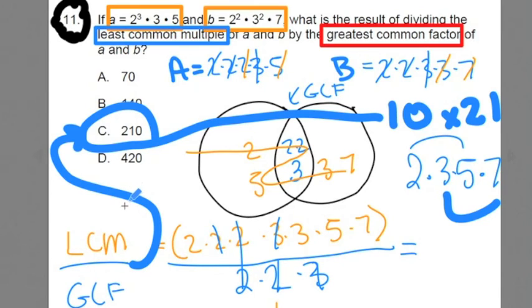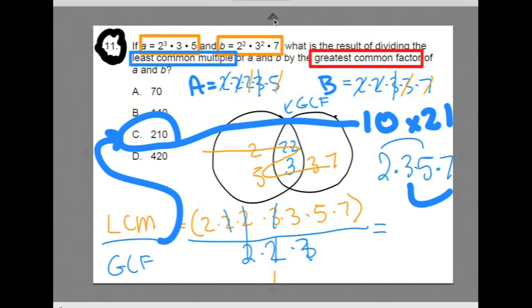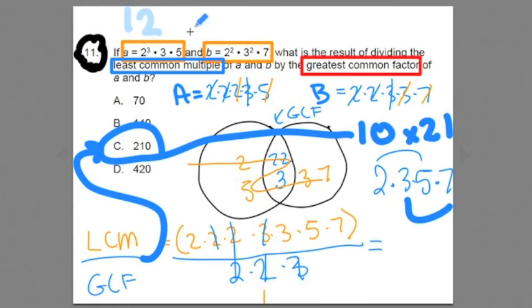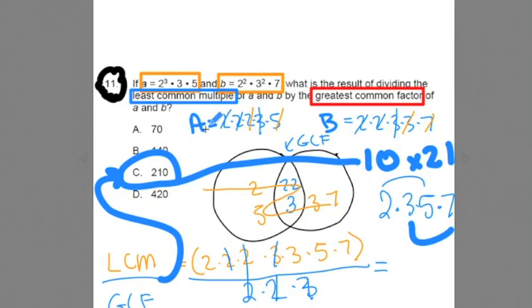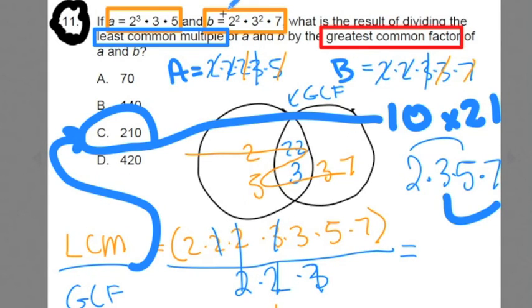Tricky stuff, I know. Try this problem again. And when you do this one again, use numbers like 12 and 18 to practice how to find the least common multiple and greatest common factor of two numbers using the Venn diagram. Then go back and use the values that they give you, which are already in prime factorization form. Have a great day, team. Take care. Bye-bye.